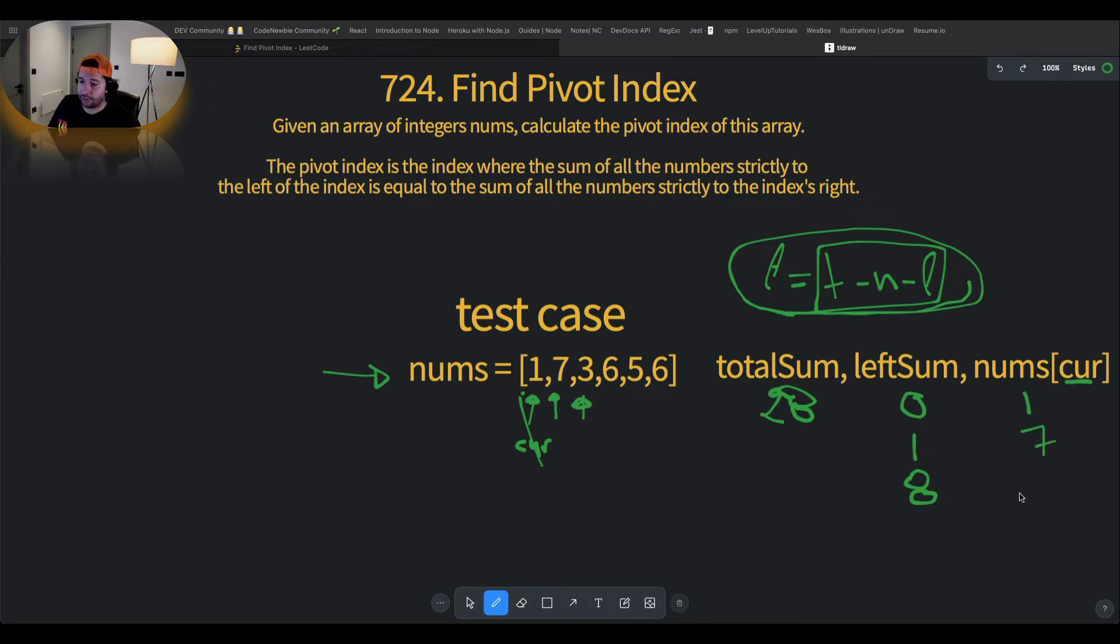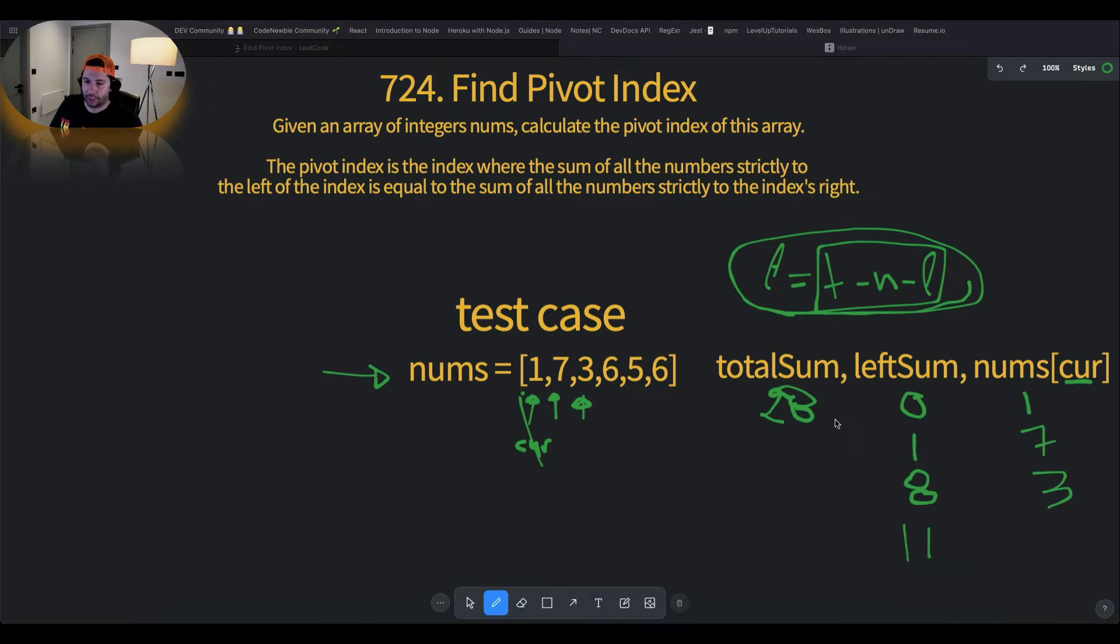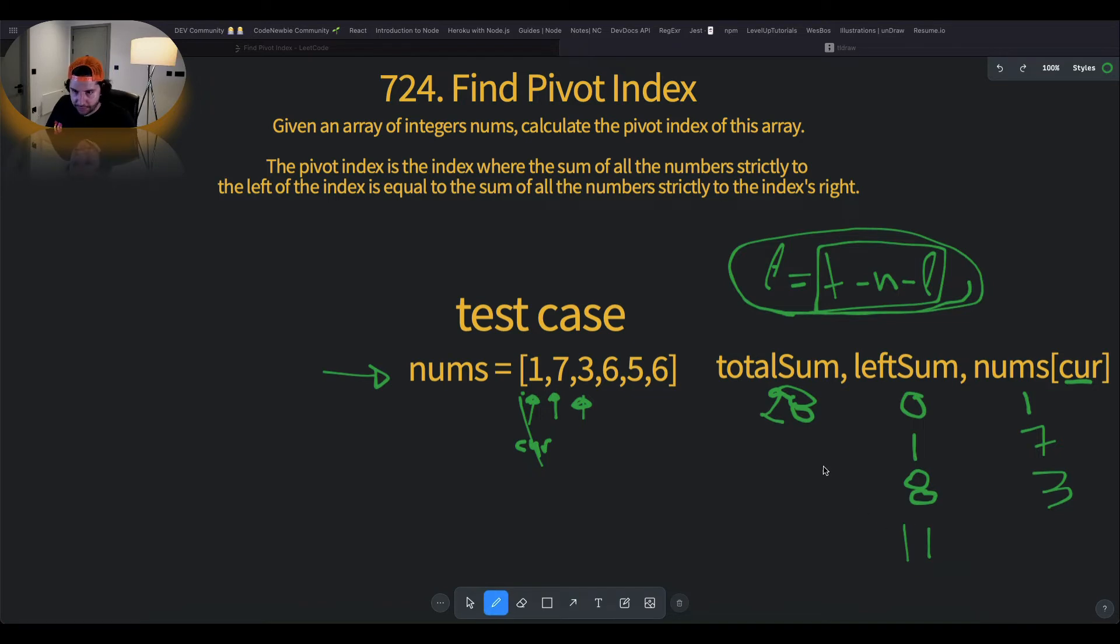So what we need to do is to increase the left sum by the number 3. So it's going to be 11. Hopefully I haven't done any mistake with the maths here. And that's the fourth iteration. The current pointer points to the number 6. And what we need to do, that's going to be 17 minus 6 is equal to 11. So sweet.